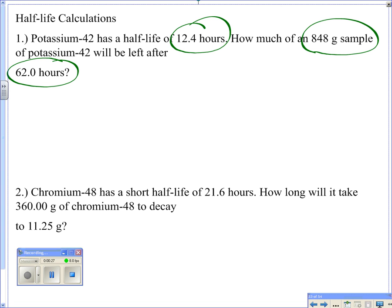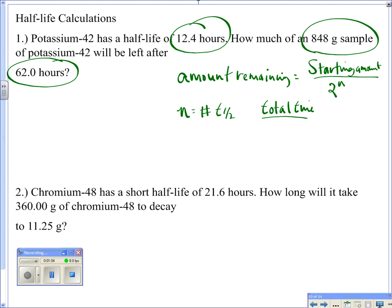And so this is just the simple formula that the amount remaining will equal how much you start with. So your starting amount divided by 2, because it's half-life, to the n, where n is your number of half-lives. And to figure that out, how many times you go through that half-life, you just take your total time divided by your half-life, and that's going to equal your n.